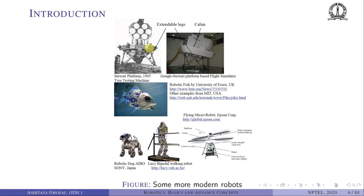Another famous robot is the Stewart platform, originally developed for tire testing but now most often used in flight simulators. A cabin with video screens and controls is mounted on six extensible legs. As you extend or retract these legs, the cabin can move in all three XYZ directions and can also perform roll, pitch, and yaw, allowing a person to be trained to fly an aircraft.